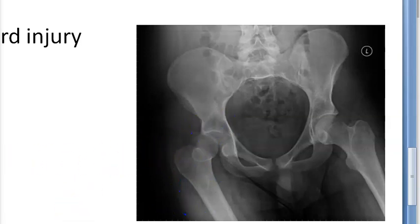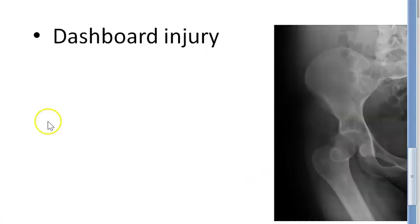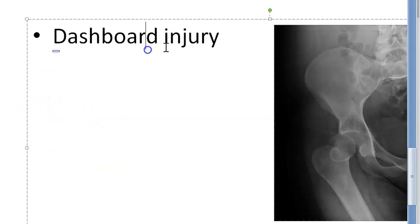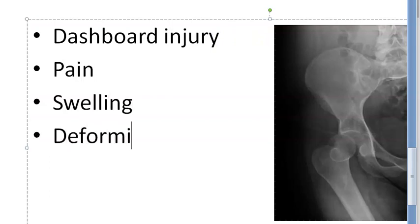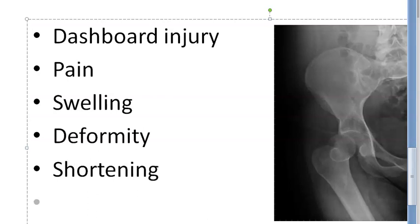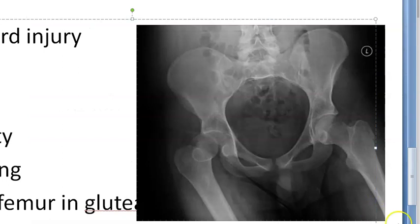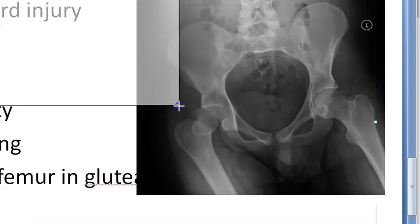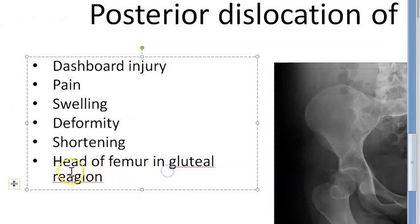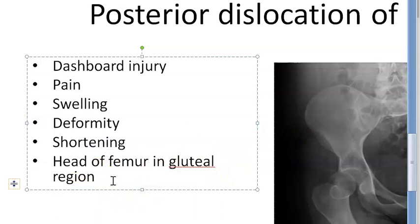If a patient is unconscious, you may not even notice that the hip has been dislocated. The standard findings to document are pain, swelling, and deformity — that deformity being shortening of the leg — and the head of femur palpable in the gluteal region. In unconscious patients this may go unnoticed. So if there is a femur fracture, you should always do an x-ray of the pelvis.